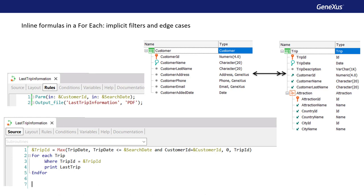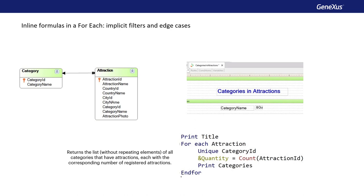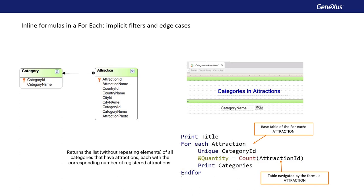Now let's see another case of an inline formula defined inside a ForEach, where the table navigated by the formula matches the base table of the ForEach — note that in both cases the table is Attraction. However, in this example, we've added a unique clause by CategoryID, and because of that, GeneXus will group the attractions by category, both in the ForEach and in the formula. Therefore, the count formula will add from the context an implicit condition in its evaluation — it'll count all the attractions for the attribute declared in the unique clause, as if it were a control break breaking through CategoryID. Thanks to this additional condition provided by the unique clause, GeneXus can solve the problem that the table browsed by the formula matches the base table of the ForEach, since only the attractions of the category given in the unique clause will be counted.